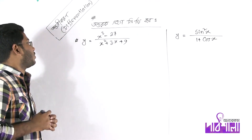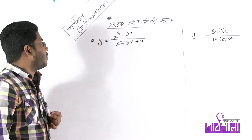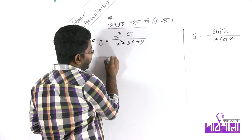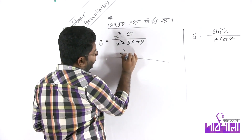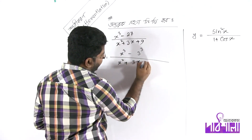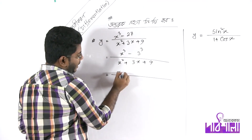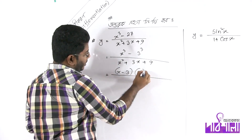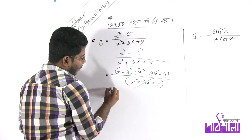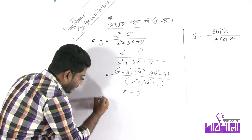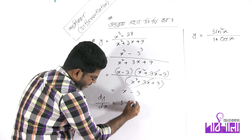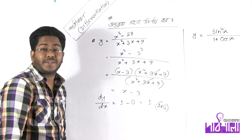Next example: y = (x³ - 27) / (x² + 3x + 9). We simplify first: x³ - 27 is x³ - 3³, applying the difference of cubes formula gives (x - 3)(x² + 3x + 9). The (x² + 3x + 9) terms cancel, leaving only (x - 3). Differentiating x - 3: x differentiates to 1, constant 3 differentiates to 0. Result is 1.